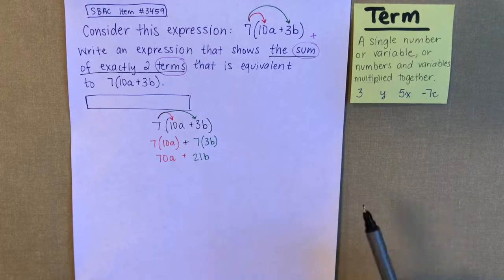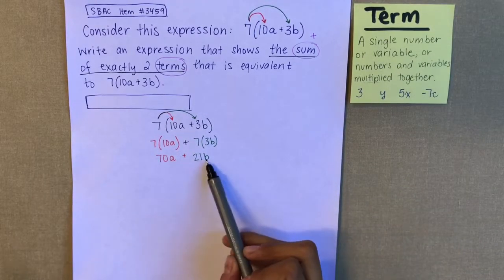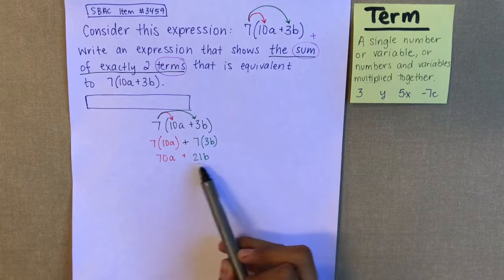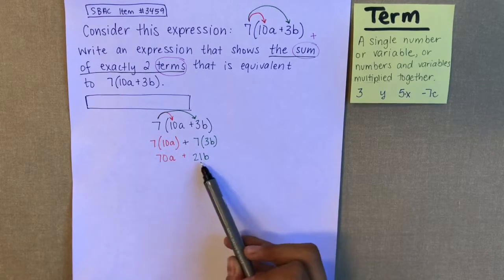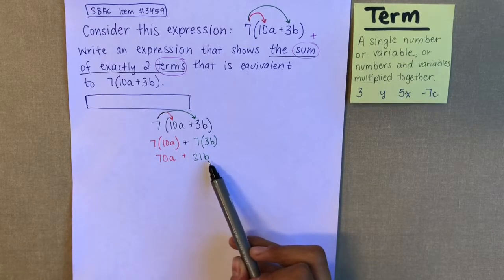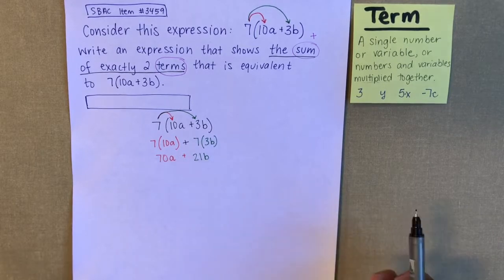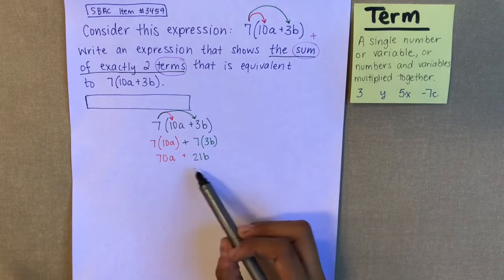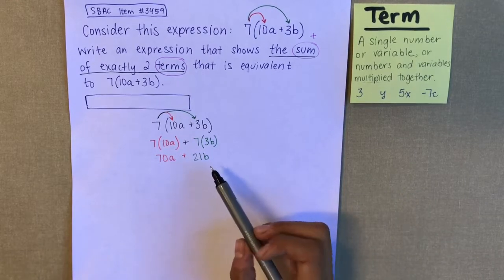Remember, you can only combine terms if they have the same variable. Since 70a and 21b don't have the same variable, I can't combine them. So this is going to be as simple as I can make this expression.